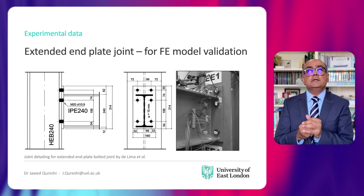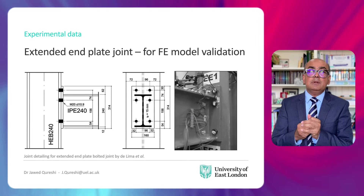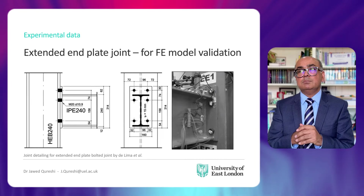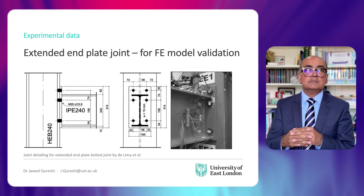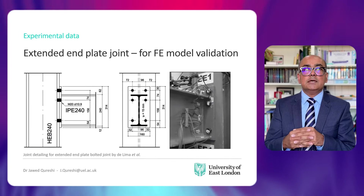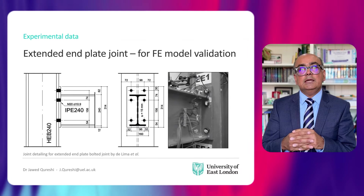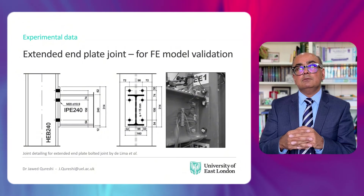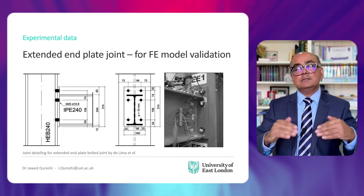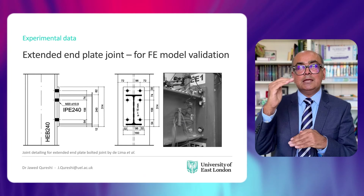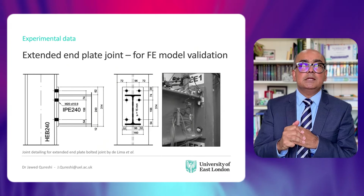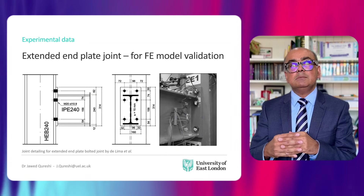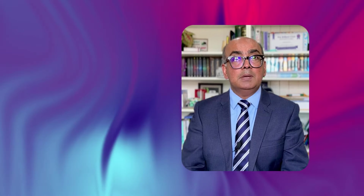This is the joint detailing for the second experiment, which is related to an extended end plate joint. The testing was conducted by Da Lima. The column size is again 240×240 by 85 kg/m and the beam size is the same 240×120 by 31 kg/m. The only difference here is that the plates are extended end plates, not flush end plates. M20 grade 10.9 bolts are used, steel plate thickness is 15 mm, and S275 steel is used for all members.